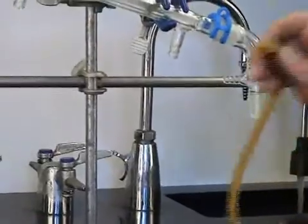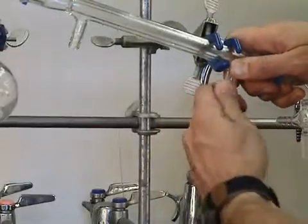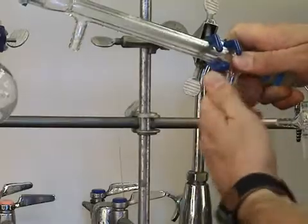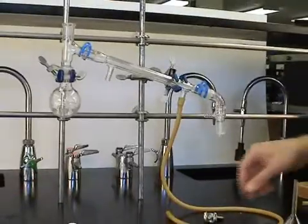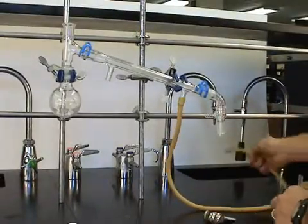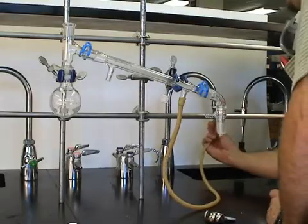Take a piece of latex tubing and wet it with a little bit of water, and slide it up over the tubulature. The lower end of the condenser gets attached to the cold water tap.